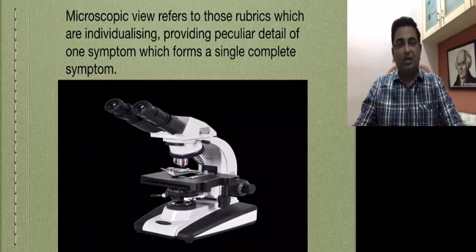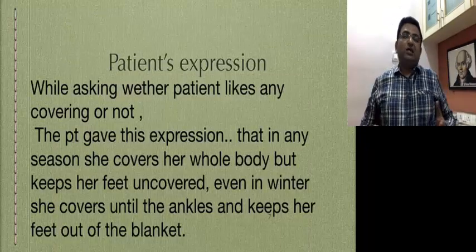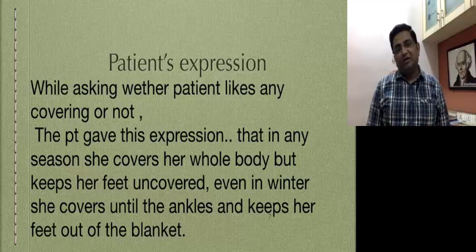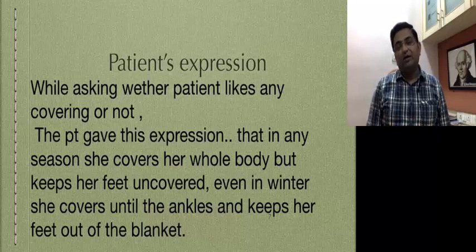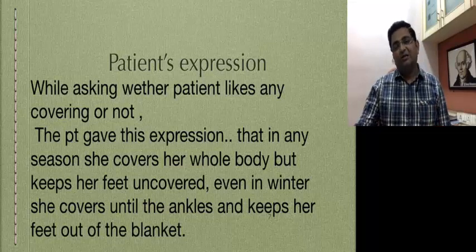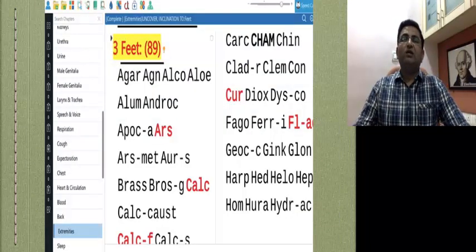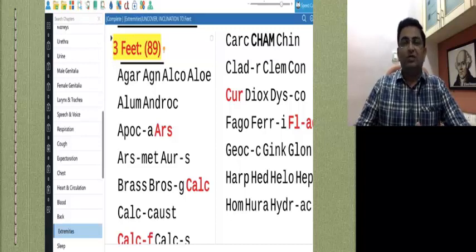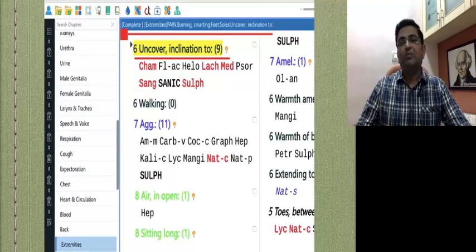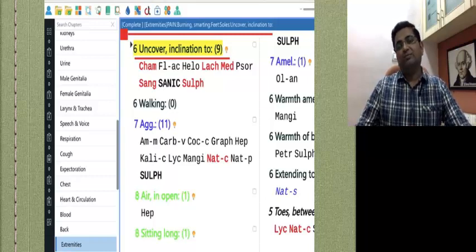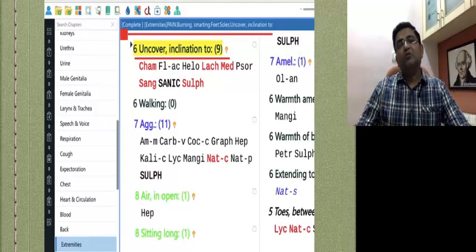I have a very interesting case. While asking whether the patient likes any covering or not, the patient gave this expression that in any season, she covers her whole body but keeps her feet uncovered. Even in winter, she covers until the ankles and keeps her feet out of the blanket. So here, if you see the rubric: Extremities — Feet — Inclination to uncover. In many patients you find this because of burning pain, they keep their feet uncovered. So the rubric in extremities is: Pain — Burning/smarting — Inclination to uncover feet.